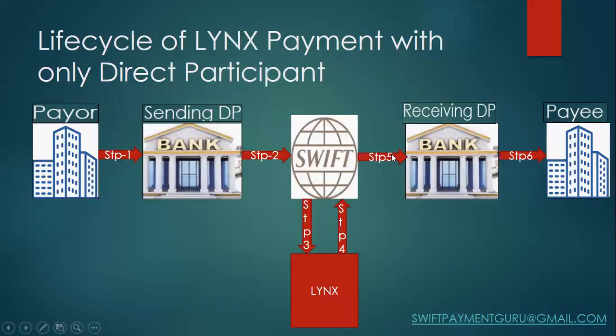In this picture you can see the typical workflow of a LYNX payment — how the payment flows from payer to payee. This is an example where the payment flows via the direct participants. We have the direct participant on the sender side and the direct participant on the receiver side. These two banks are the direct participants under the LYNX payment schema, and they have their agreement done well before sending the payment.